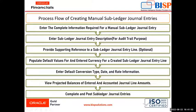The process flow of creating Manual Subledger Journal Entries: Enter the complete information required in the Manual Subledger Journal Entry. Enter the Subledger Journal Entry description for audit trail purposes. Provide supporting reference to the Subledger Journal Entry line, which is optional. Populate the default value and enter currency for creating Subledger Journal Entry lines. Enter default conversion type, date, and rate information. View the projected balances for entered and accounted journal line amounts. Complete and post Subledger Journal Entries. These tasks are performed in the Subledger.